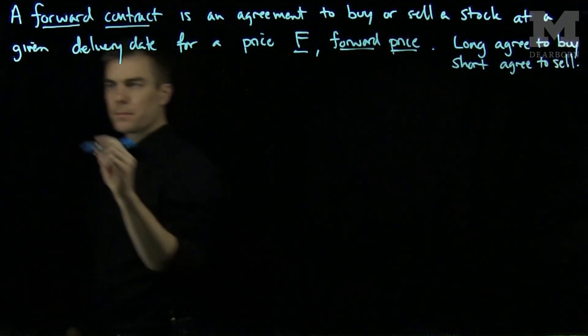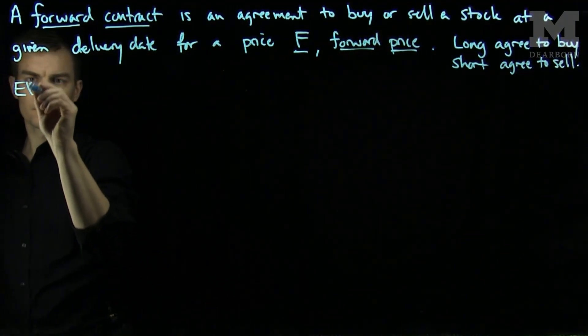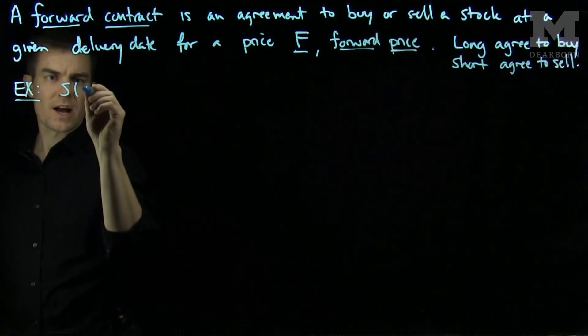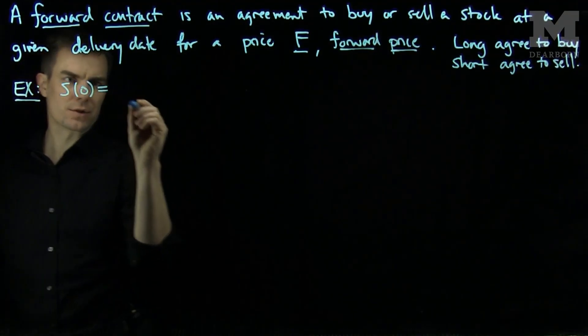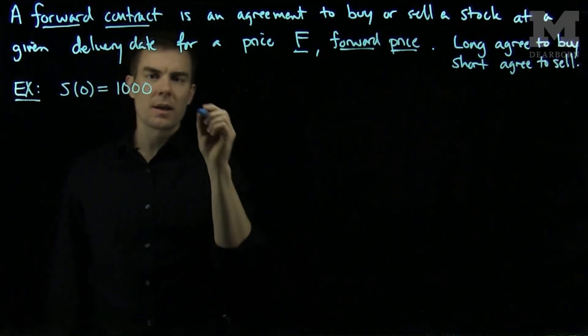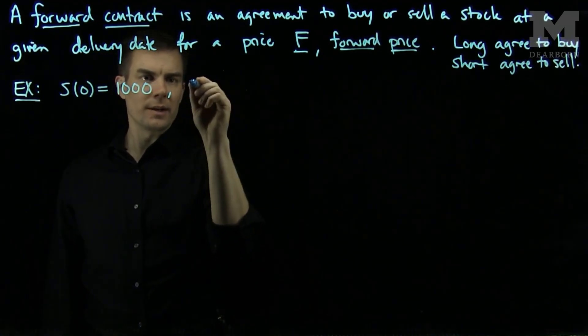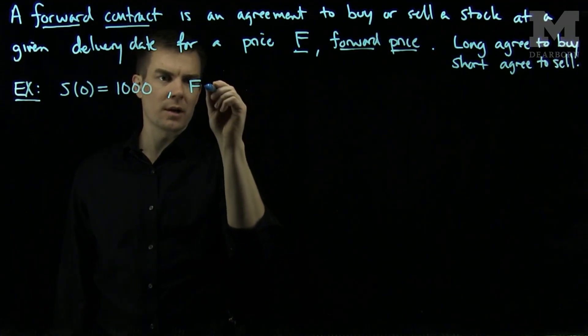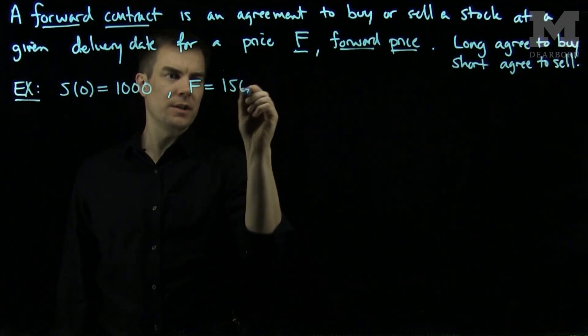For example, let's suppose that initially the stock price of a certain stock is $1,000, and the forward price after, say, one year is $1,500.